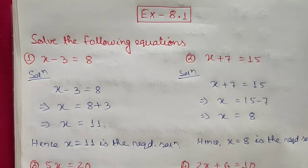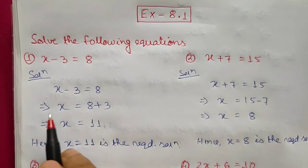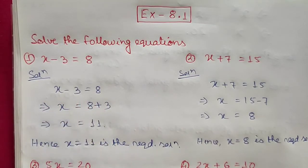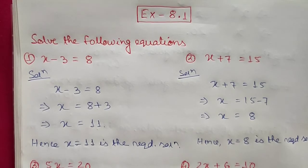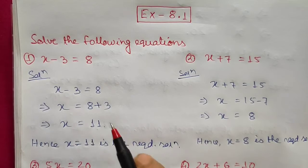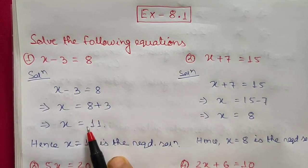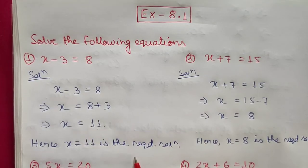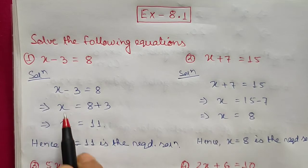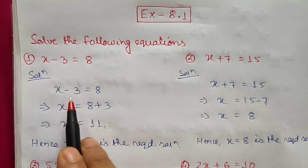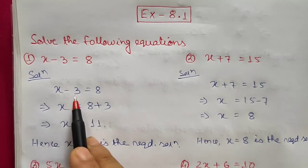Let's start with equations that have variables on only one side. Question 1: x minus 3 equals 1. Using transposing, we bring the constant to the right hand side. Minus 3 changes to plus 3, so x equals 1 plus 3, which gives x equals 11. Verification: substituting x = 11, left hand side gives 11 minus 3 equals 8, and right hand side is also 8. Correct.